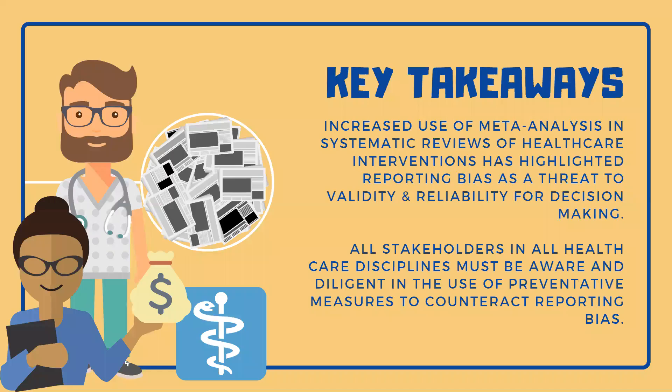Increased use of meta-analysis and systematic reviews of healthcare interventions has highlighted several types of bias that can arise at all stages of a randomised control trial. Reporting bias has been recognised as a potential threat to validity for meta-analysis, and can make the readily available body of evidence unreliable for decision-making. Consequently, students, researchers, clinicians, and stakeholders across all healthcare disciplines must be diligent, transparent, and aware of the potential for reporting bias to distort treatment efficacy, which threatens the practice of evidence-based medicine.